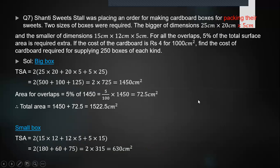Then I'm moving on to the seventh question of the exercise, which is a good question. Shanti sweet stall was placing an order for making cardboard boxes for packing their sweets. Two sizes of boxes were required. The bigger of dimensions 25 cm × 20 cm × 5 cm, and the smaller of dimensions 15 cm × 12 cm × 5 cm. For all the overlaps, 5% of the total surface area is required extra. If the cost of the cardboard is rupees 4 for 1000 centimeters square, find the cost of cardboard required for supplying 250 boxes of each kind.